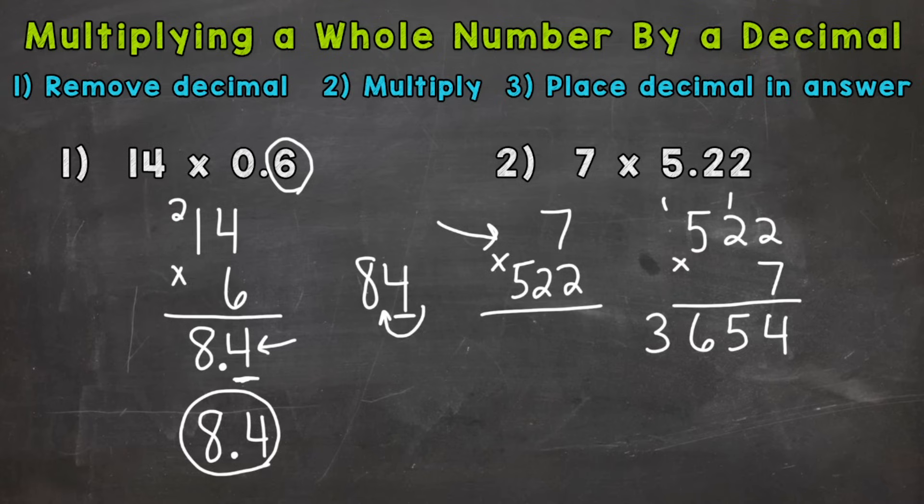But that's not our final answer. We need to place the decimal. So let's look at our original problem. See how many digits are behind or are to the right of a decimal. And we have one, two. So that means our answer needs to have two.